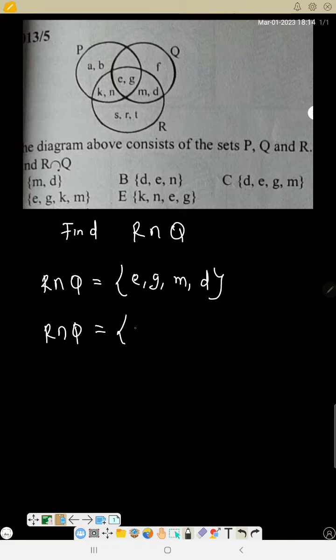See option A now - D, M. But that is just M, D, that is R intersection Q only. Don't make that mistake. R intersection Q is everything here.